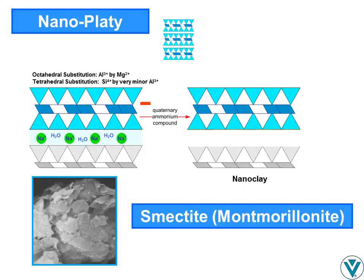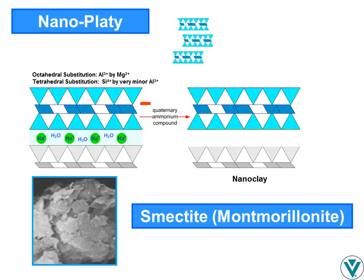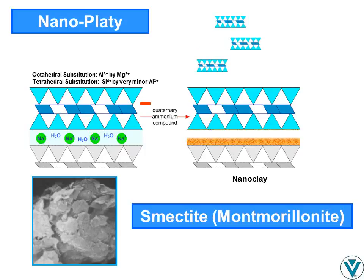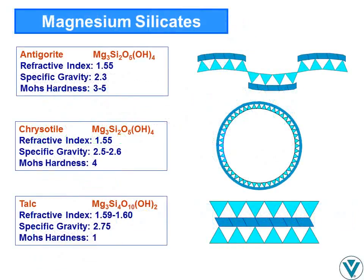When sodium is the primary counterion and the clay is mixed with water, its diffusion from the interlayer water as additional water enters by osmosis enables complete delamination. Nanoclays are made by substituting cationic surfactants, typically fatty quaternary ammonium compounds, for exchangeable sodium. The structurally related common tri-octahedral phyllosilicates are antigorite, chrysotile, and talc.